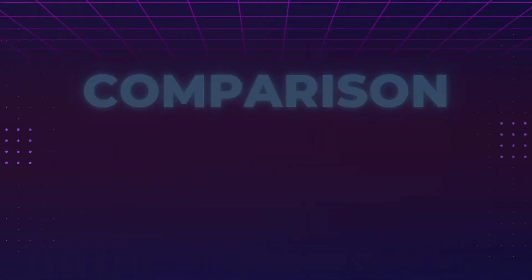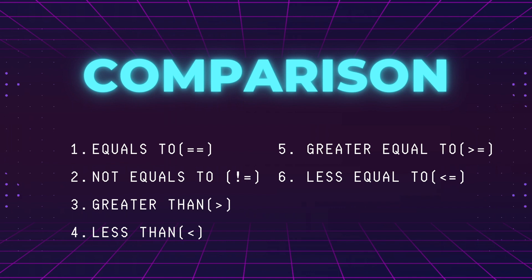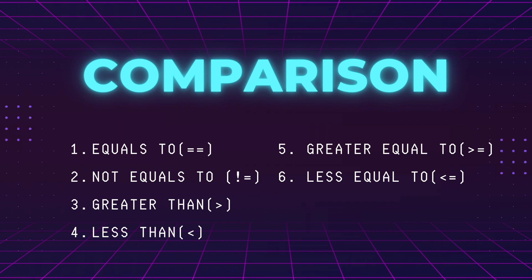Next we have comparison operators, which include equality, non-equality, greater than, less than, greater than or equal to, and less than or equal to. These take two operands and return a boolean. The question now is what you can compare in Solidity — not all data types are compatible for comparison. For example, trying to compare a uint with an address gives an error, but comparing a uint256 with uint8 still works, while comparison of uint and int does not work and gives an error.